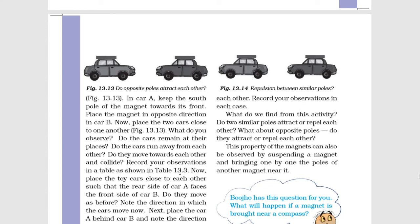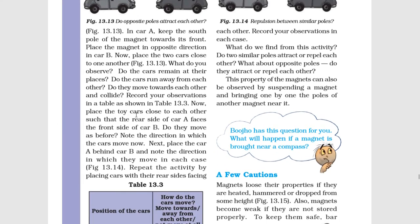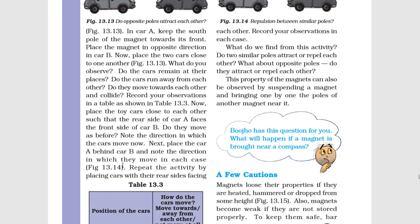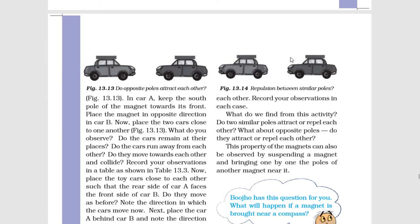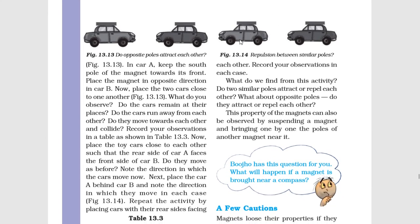Now place the toy cars close to each other such that the rear side of car A faces the front side of car B. Car A ka pichhe bhaag car B ke agra bhaag ke sammukh ho. Figure 13.14 shows repulsion between similar poles. Car B ke behind car A hai.